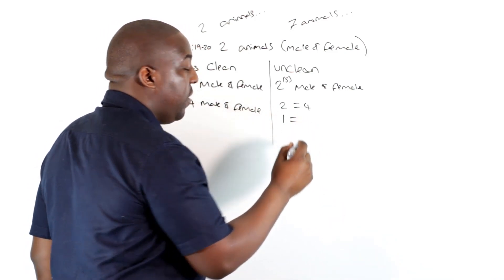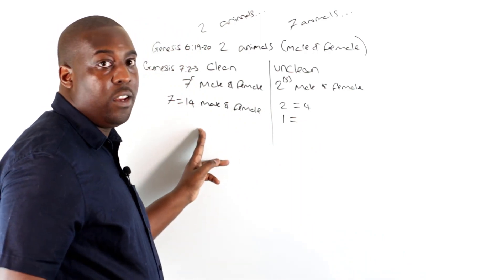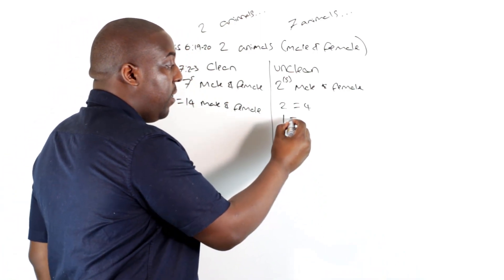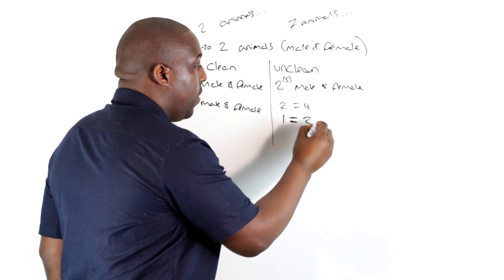Or it could just be specifically saying seven pairs of the clean animals and just generally one of the unclean.